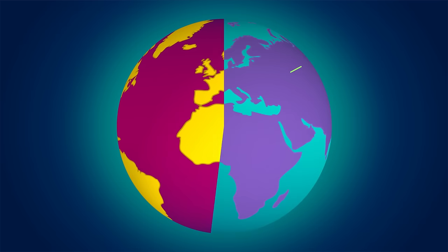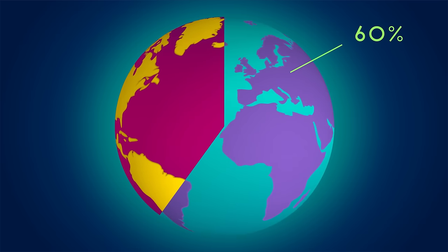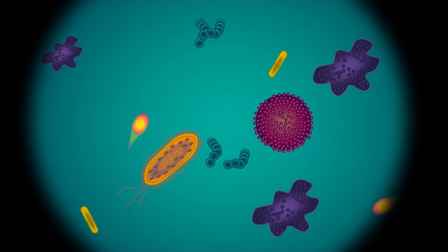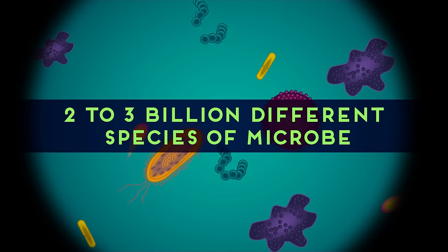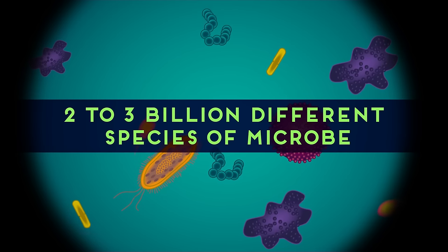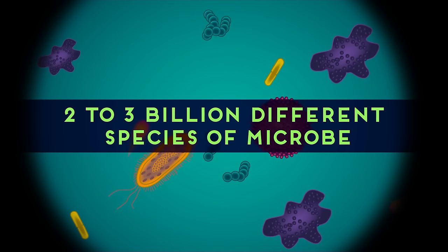Would you be surprised to hear that over 60% of life on Earth is so small that it can only be seen with a microscope? We call all of these little things microbes or microorganisms. There is estimated to be about 2 to 3 billion different species of these little guys and the best thing, we can't live without them.